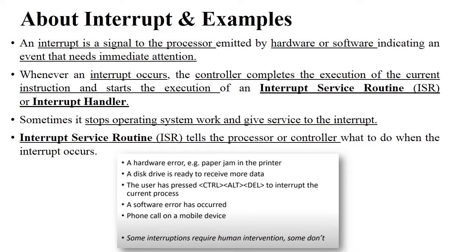An interrupt is a signal given to a hardware or software device to the processor. The microcontroller gives immediate attention to the interrupt, services it, and then resumes the current task. When an interrupt occurs, the controller completes execution of the current instruction and gives service to the interrupt service routine. The interrupt handler handles all the interrupts. An example: when you click the print option but there is paper jammed in the printer, a hardware interrupt occurs.